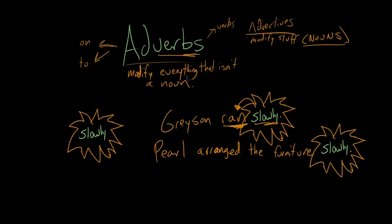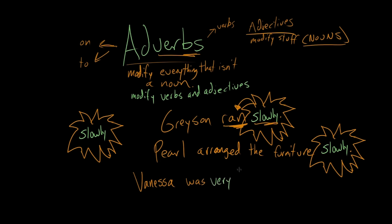A word is also considered an adverb if it modifies an adjective. So adverbs modify verbs and adjectives. We could say something like 'Vanessa was very hungry.' Because hungry is an adjective, and very is doing this thing where it's modifying hungry. Vanessa wasn't 'very' — you can't be very. Very is not an adjective; it is a modifier, and the word it's modifying is hungry. How hungry was Vanessa? Very hungry. Vanessa could also be slightly hungry.